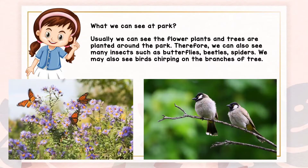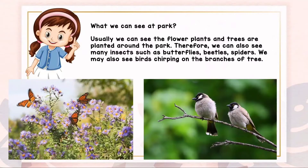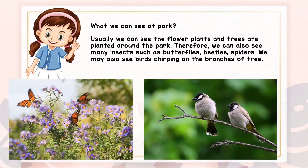What can we see in the park? Usually we can see flower plants and trees planted around the park. We can also see many insects such as butterflies, beetles, and spiders. We may also see birds chirping on the branches of a tree. Biasanya, tumbuh-tumbuhan akan ditanam di sekeliling taman. Maka, kita juga boleh melihat serangga seperti rama-rama, kumbang dan laba-laba. Kita juga boleh melihat burung-burung hingga di atas pokok.